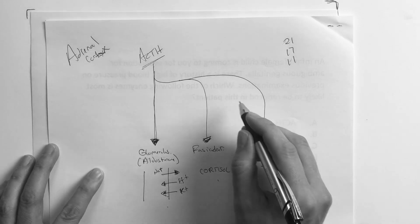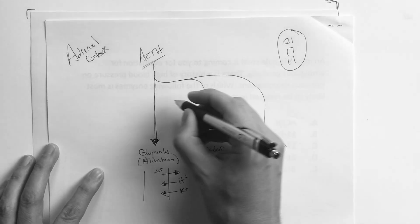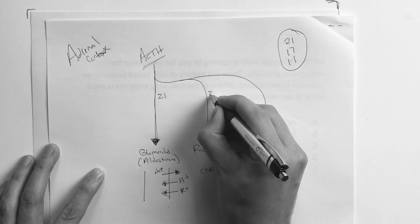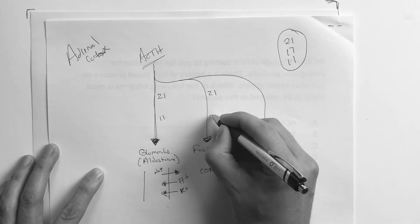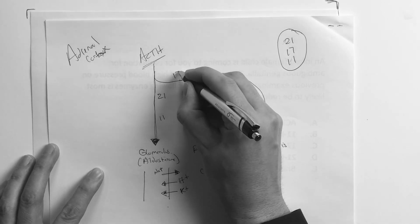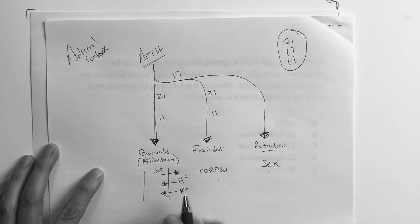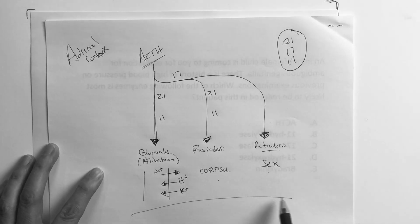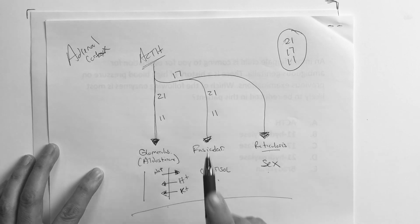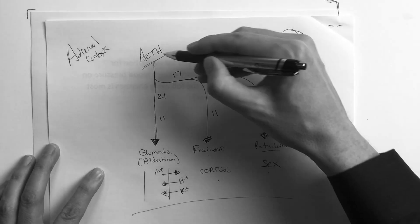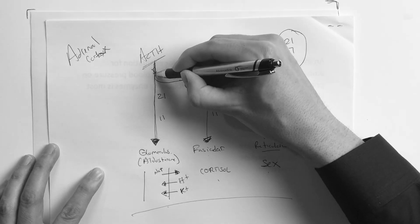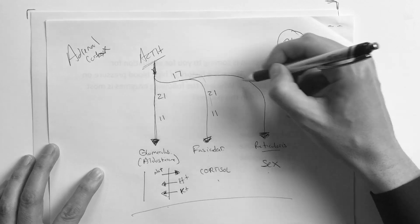When this gets activated, sodium gets reabsorbed, hydrogen gets excreted, potassium gets excreted, that's normal. This fascicular layer, you're dealing with cortisol, and then the reticularis, you're dealing with the sex hormones. Now, you have these enzymes, and you just gotta know where to place these guys. We're gonna put 21, then we put 11, and then we're gonna put 17 right there.